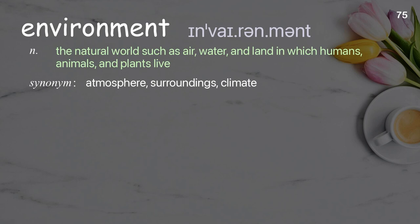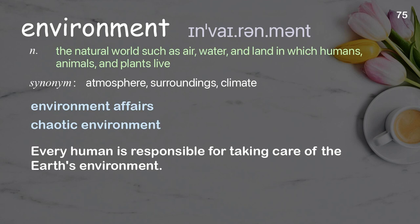Environment: the natural world such as air, water, and land in which humans, animals, and plants live. Examples: environment affairs; chaotic environment. Every human is responsible for taking care of the Earth's environment.